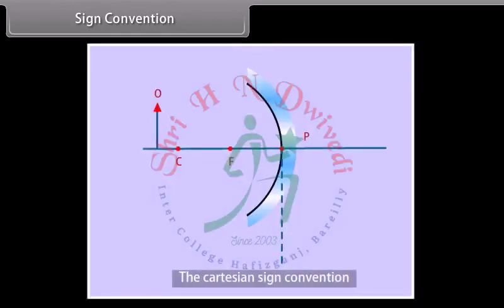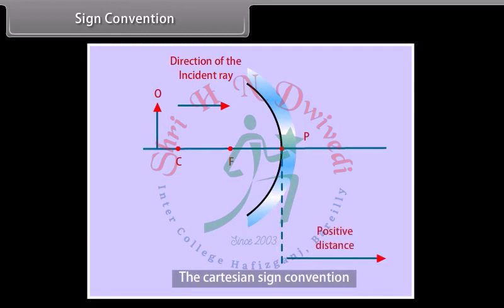Sign convention: distances measured in the direction of the incident ray are taken to be positive, and those measured opposite are taken to be negative. Heights measured upwards are taken to be positive, and those measured downwards are taken to be negative.